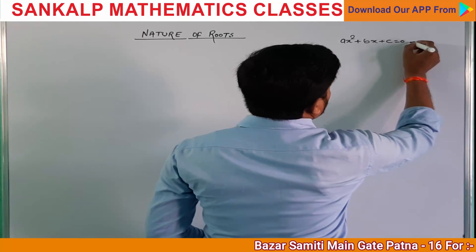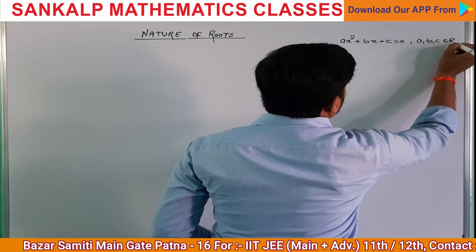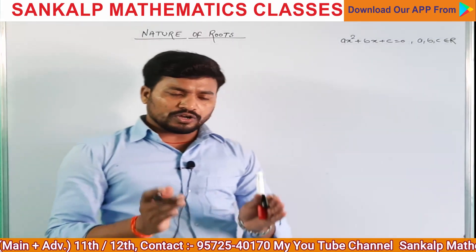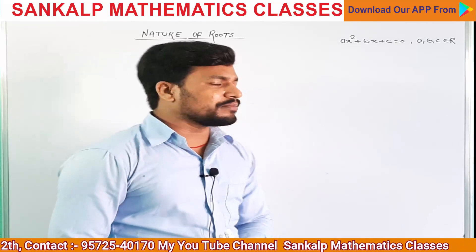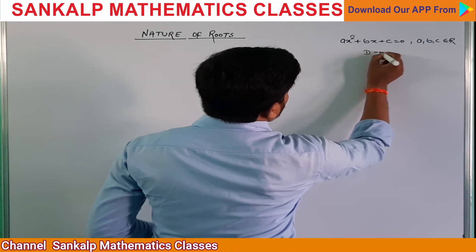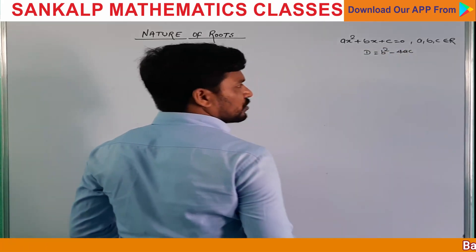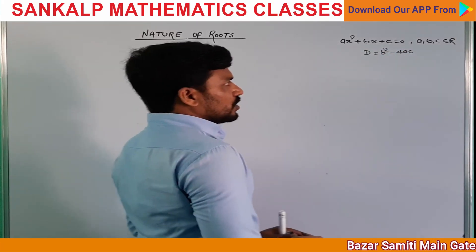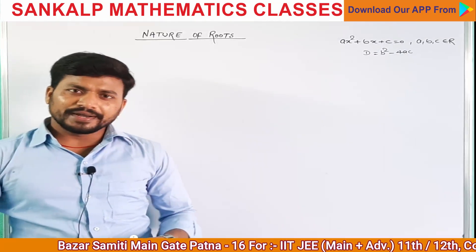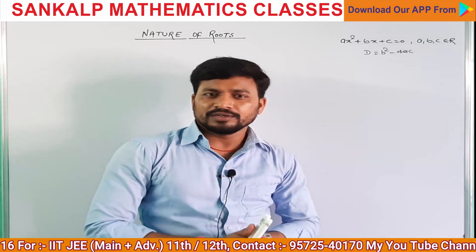इसमें पहली condition: a, b, c belongs to R — rational number। आप सभी लोग जानते हो D equal to b² - 4ac होता है। किसी quadratic equation की nature of roots depend किस पर करेगा — D पर ही करेगा।